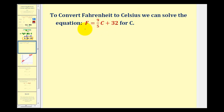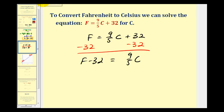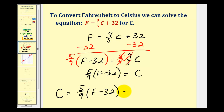To convert Fahrenheit to Celsius, we can take this equation and solve for C. Starting with F = (9/5)C + 32, we subtract 32 from both sides to get F − 32 = (9/5)C. Then we multiply both sides by the reciprocal of nine-fifths, which is five-ninths. This simplifies to C = (5/9)(F − 32), which can also be written as C = 5(F − 32) / 9.